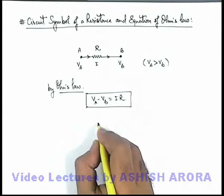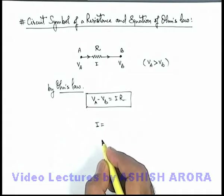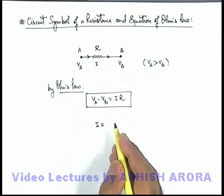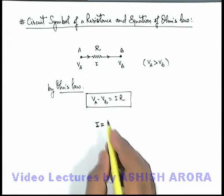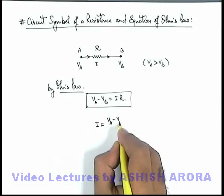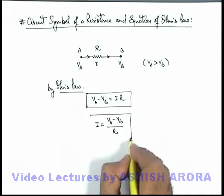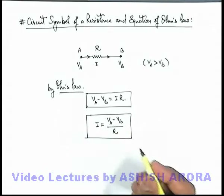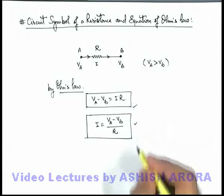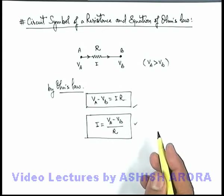It can also be simplified for calculation of current. If we know the potential difference across a resistance, then the current through the resistance can be written as (V-a minus V-b) divided by R. This is how we can directly calculate the current in the resistance, and these are the two equations by which we apply Ohm's law in various kinds of circuits.